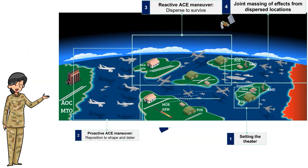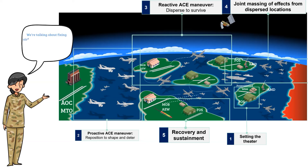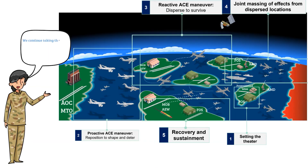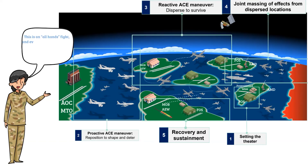Finally, the last phase involves recovery and sustainment. This involves fixing airfields rapidly and maintaining and fixing our aircraft, whether they're code one or battle damaged. We continue taking the fight to our adversary by generating combat air power to fly, fight, and win. This is an all-hands fight, and every phase relies on the skills, expertise, and innovation of multi-capable airmen.